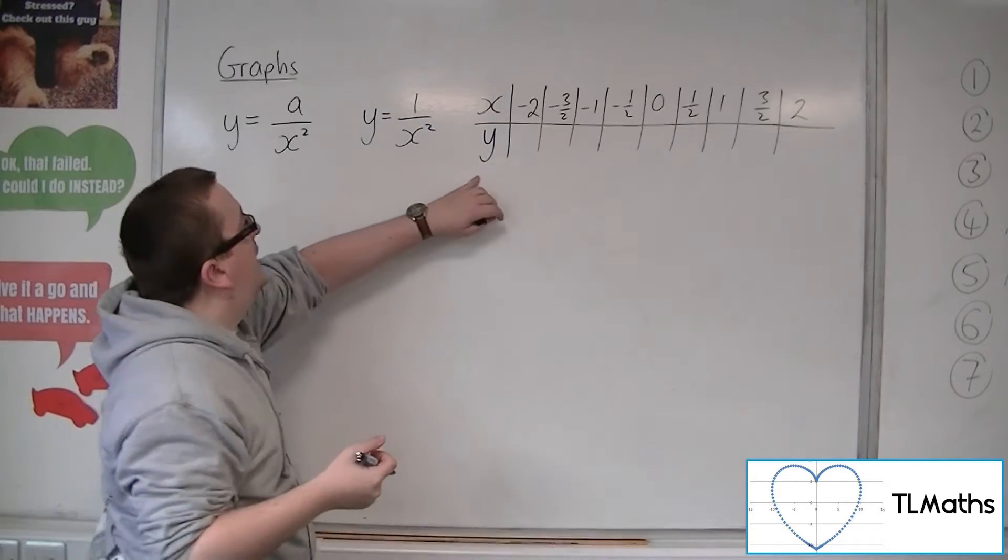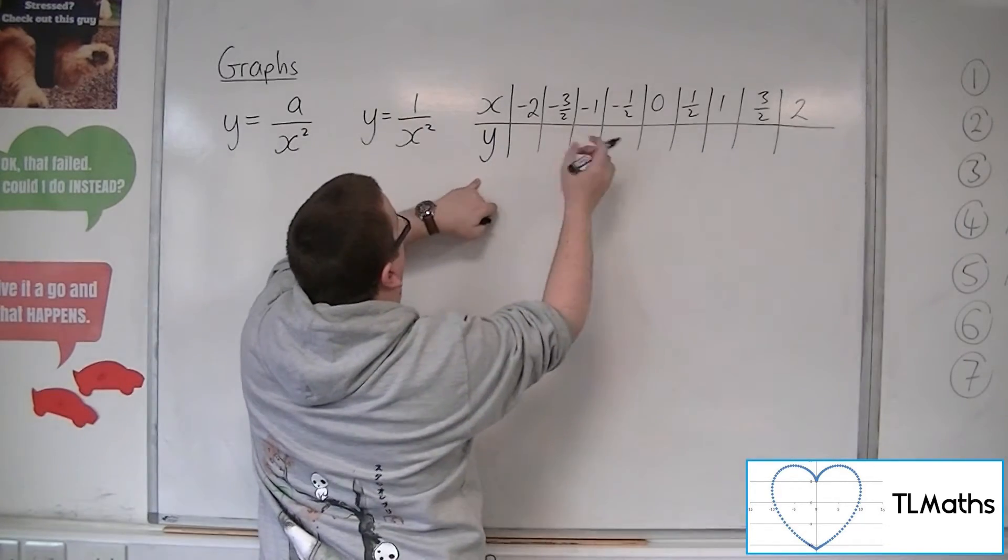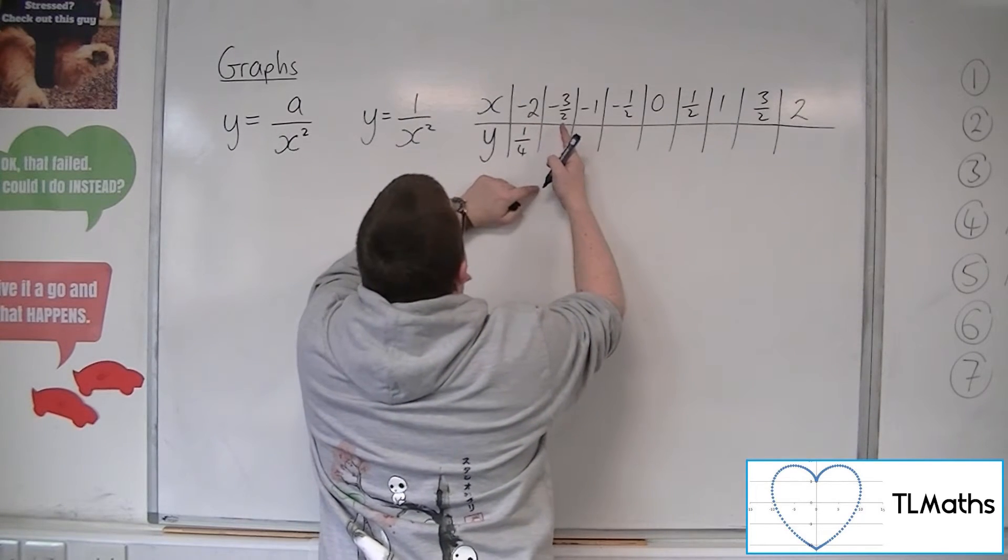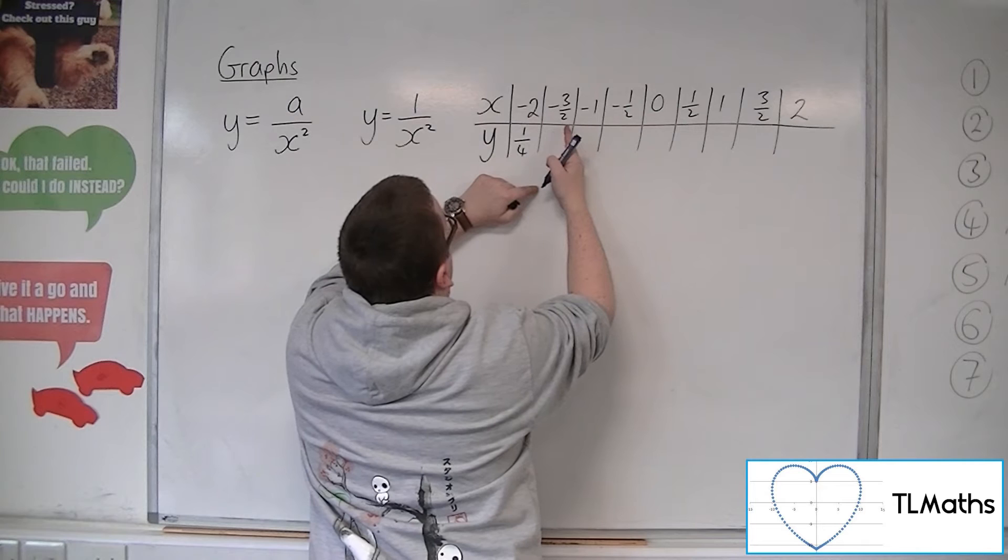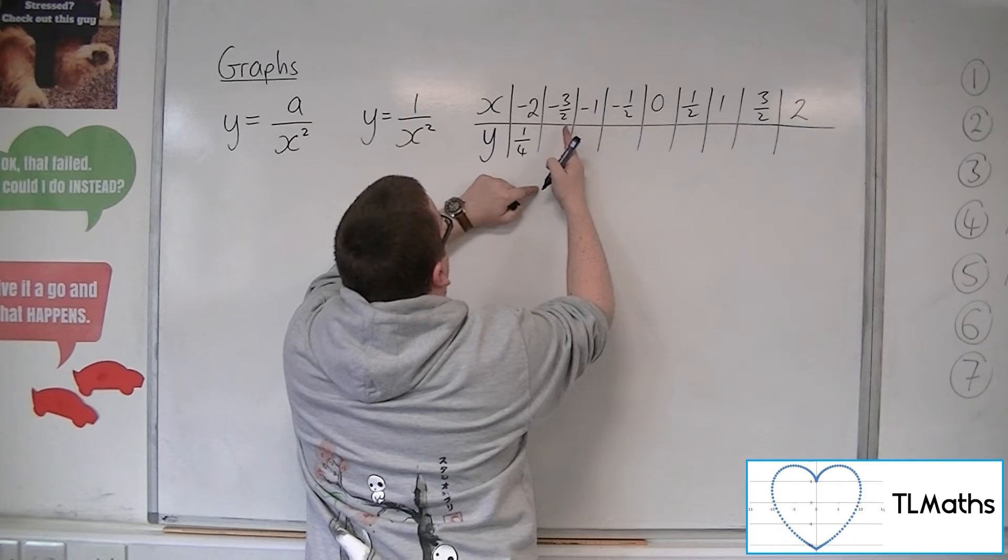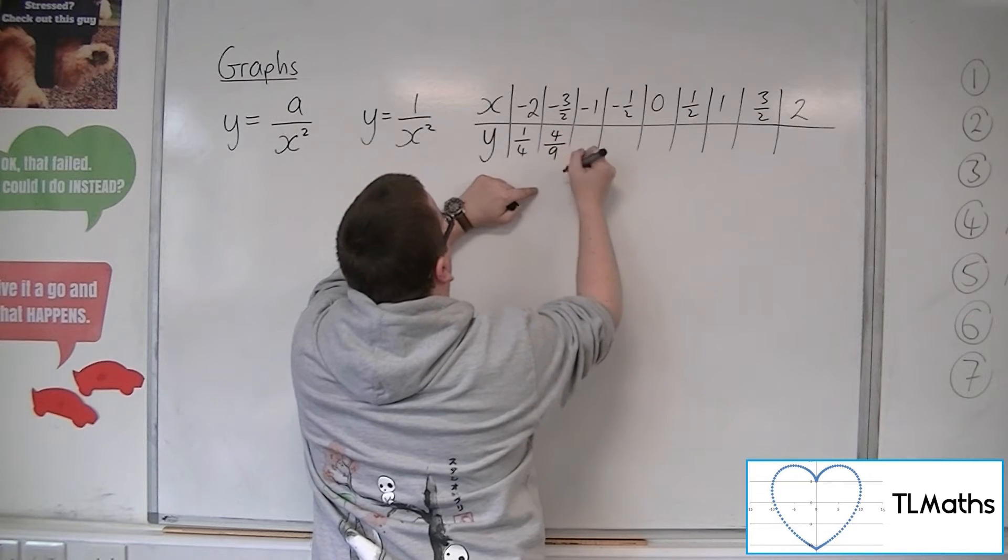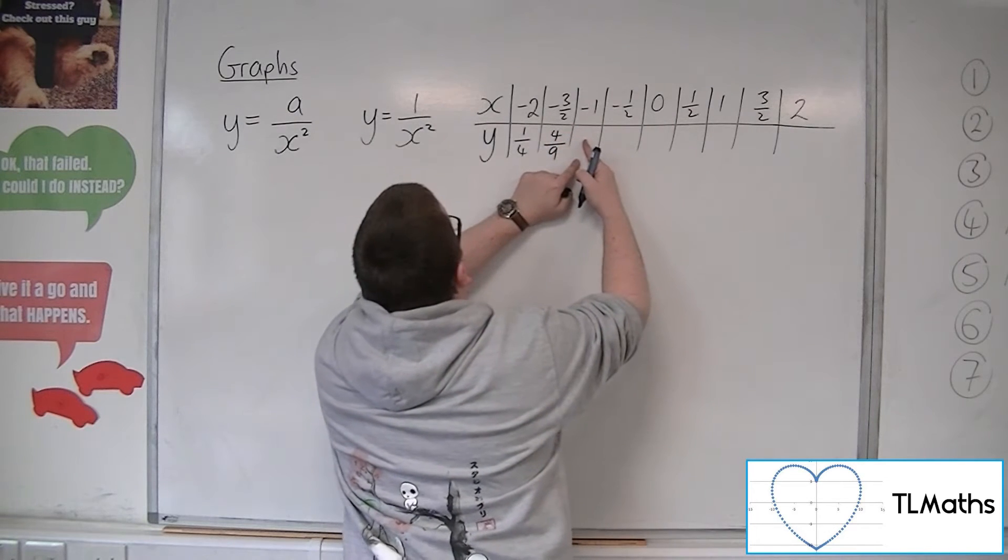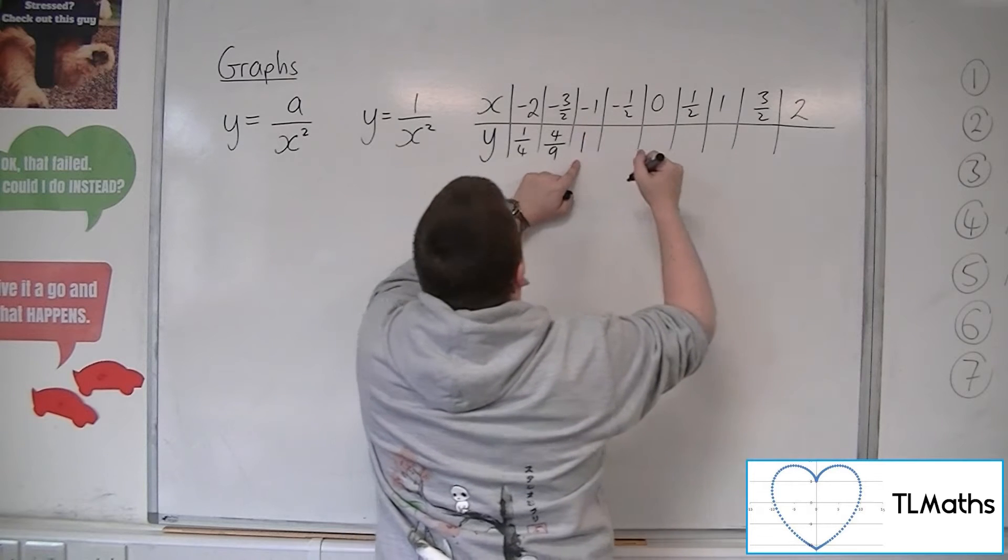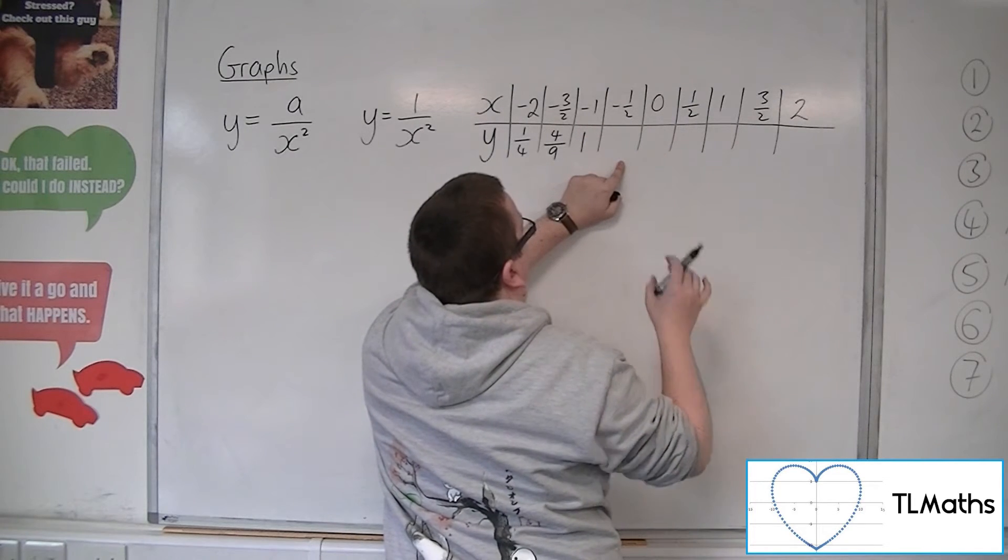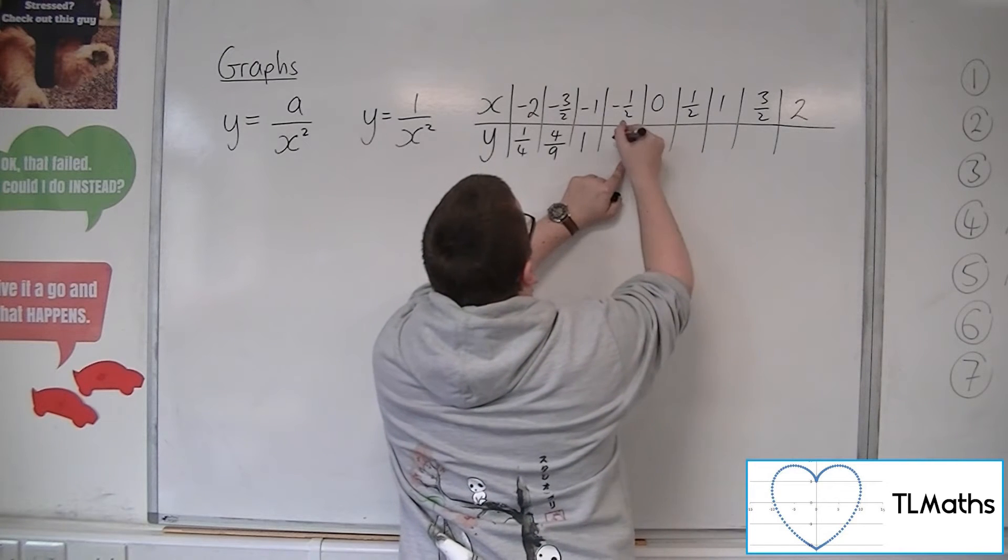For the y values: 1/(-2)² = 1/4. Then 1/(-3/2)² = 1/(9/4) = 4/9. Then 1/(-1)² = 1. Then 1/(-1/2)² = 1/(1/4) = 4.